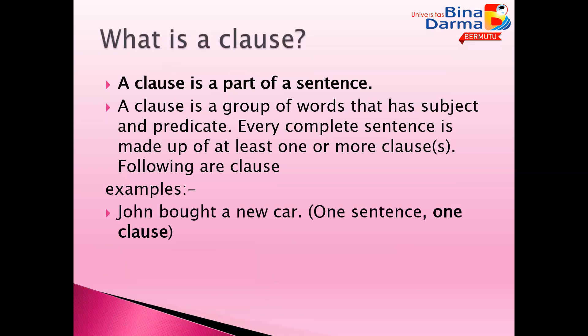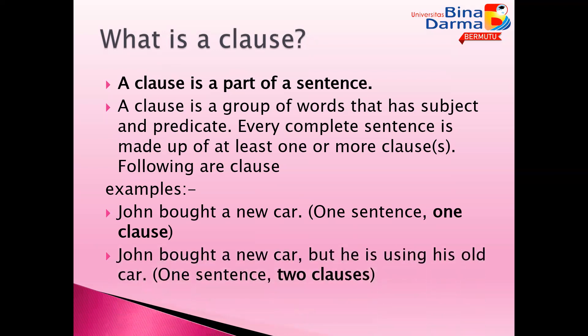Example: 'John bought a new car.' In this sentence we have one clause — one sentence, one clause. Second example: 'John bought a new car, but he is using his old car.' This is one sentence formed by two clauses. The first clause is 'John bought a new car' and the second clause is 'he is using his old car.'